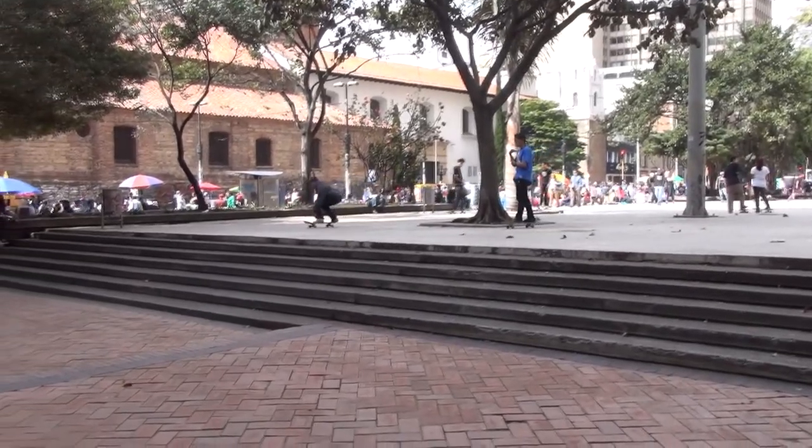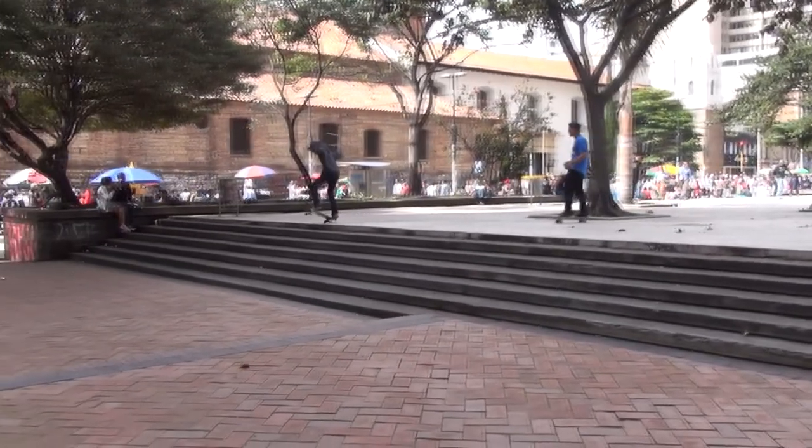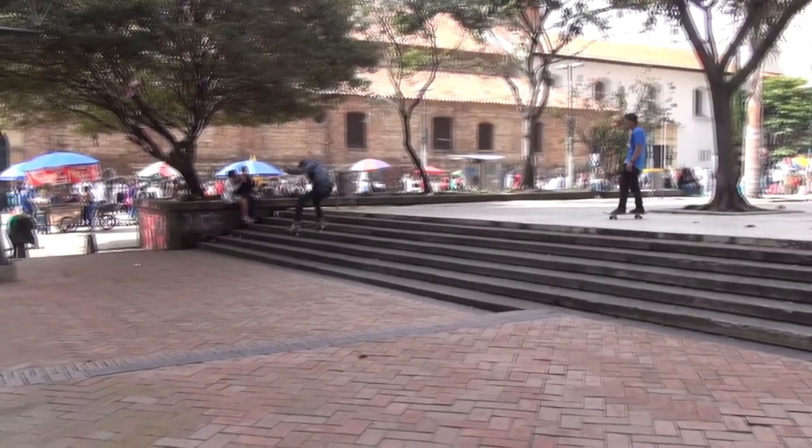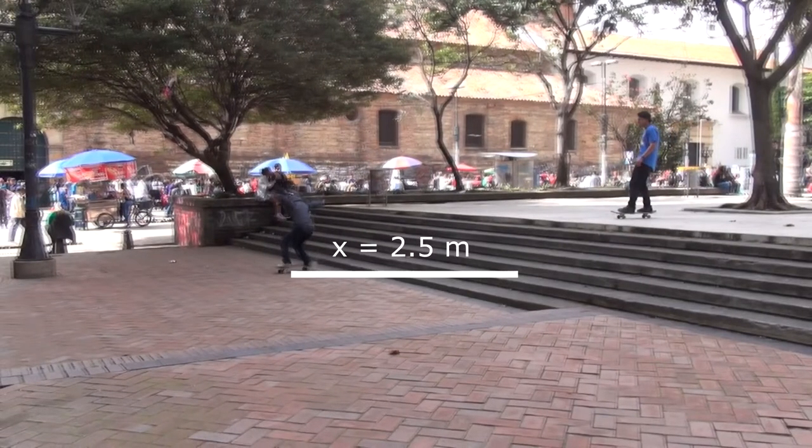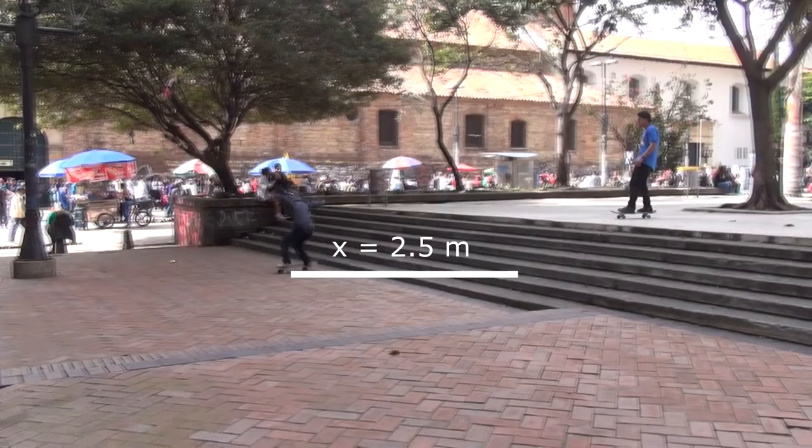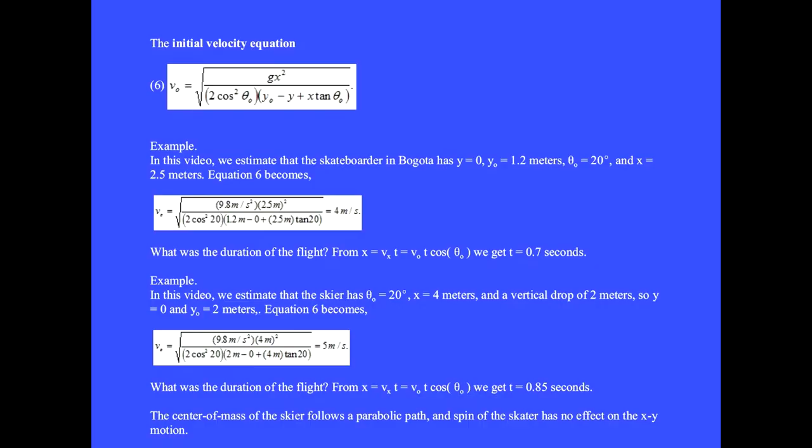And the horizontal distance traveled, x equals 2.5 meters. The initial velocity equation, 6, gives us v₀ equals 4 meters per second. What was the duration of the flight? From the x motion, we get t equals 0.7 seconds.